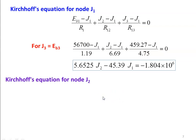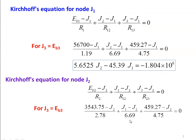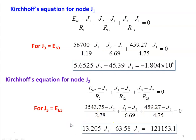Similarly, applying Kirchhoff's equation for node J2: (Eb2 − J2)/R2 + (J1 − J2)/R12 + (J3 − J2)/R23 = 0, where J3 = Eb3. Substituting Eb2 = 3543.75, R2 = 2.78, R12 = 6.69, J3 = 459.27, R23 = 4.75, and solving, we get: 13.205·J1 − 63.58·J2 = −121,143.1 ... (Equation 2).